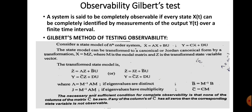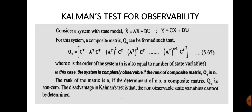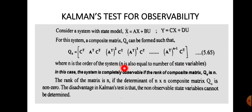Similarly, for Kalman's test for observability: given state equation x-dot = Ax + Bu and output equation y = Cx + Du, we form a composite matrix Qo with entries: [Cᵀ  Aᵀ Cᵀ  (Aᵀ)² Cᵀ  (Aᵀ)³ Cᵀ  ...], where n is the order of the system. The system is completely observable if the rank of this composite matrix Qo equals n.